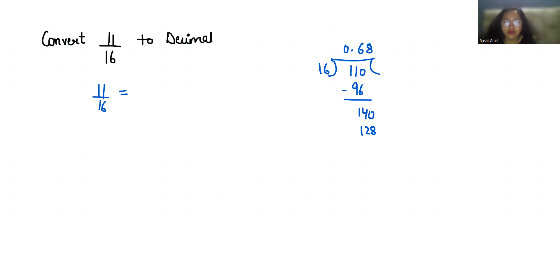16 times 8 is 128. So this gives us 12 and 0. 16 times 7 is 112.